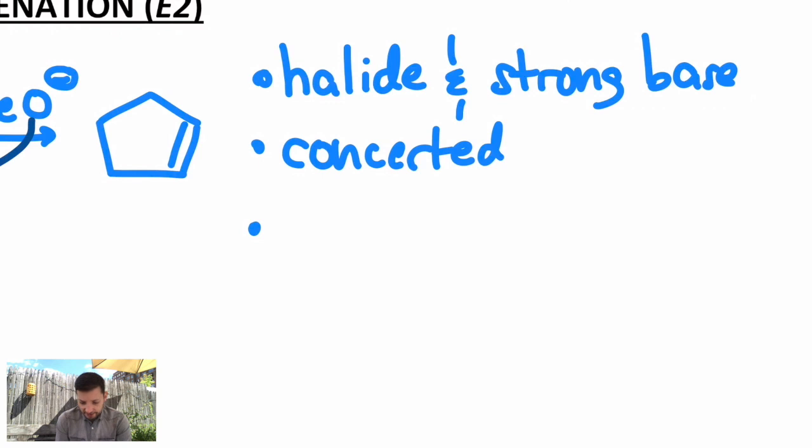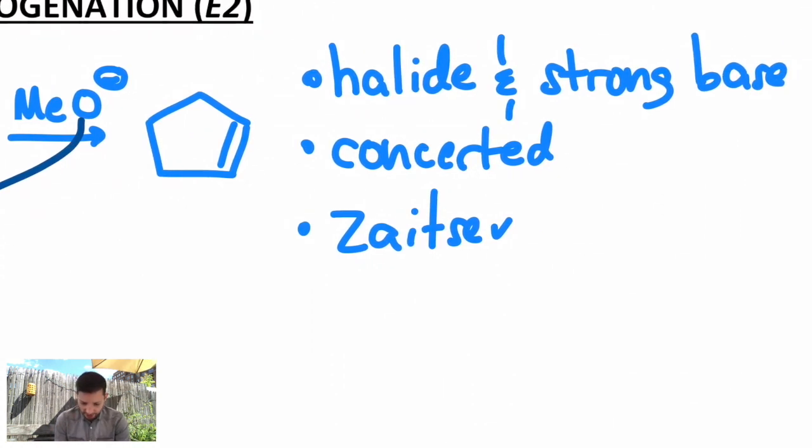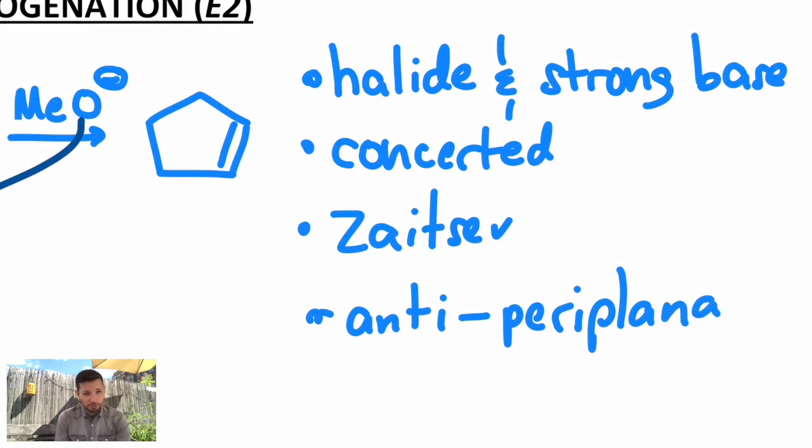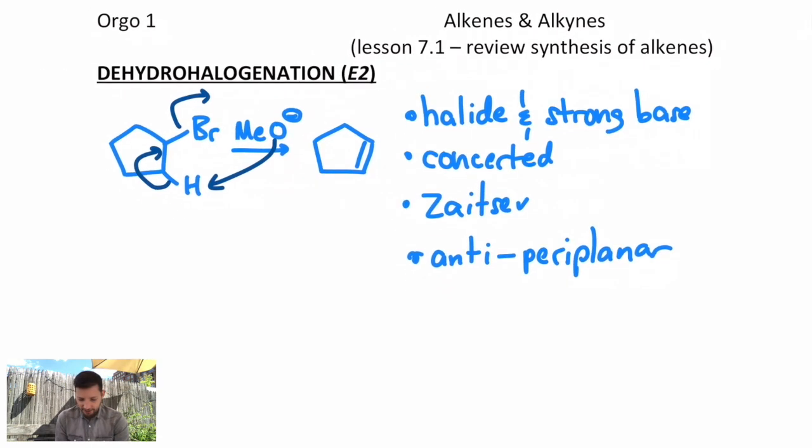You normally get the Zaitsev alkene, and just saying that should conjure memories of how do I get the non-Zaitsev? Well, I would have to use a bulkier base, things like that. So those are things we can control. And there is a requirement for the leaving group and the hydrogen that's beta to be anti-periplanar. In other words, they should be pointing in opposite directions, specifically when they're on a ring. So that's one way to make an alkene.